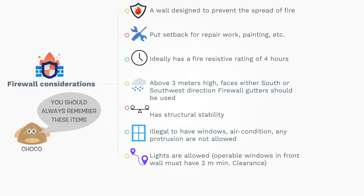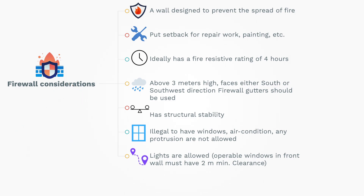Since the firewall must withstand fire, having a 4-hour fire-resistive rating is ideal. If the height of the firewall is above 3 meters, located in a tropical country, and faces either south or southwest direction, it will be prone to long periods of rain that can be damaging. Adding a gutter can be beneficial in this case. The firewall must also have structural stability, and the layers and reinforcements must meet the standards.